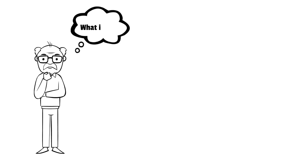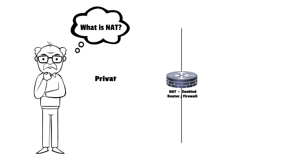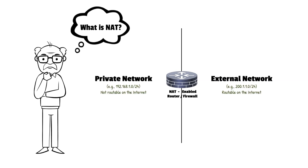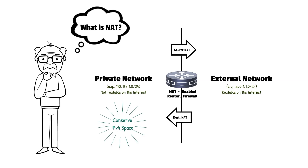Network Address Translation is a networking technique that allows devices in a private network to communicate with external networks like the Internet, by translating private IPs to public ones. NAT works in two directions: Source NAT, where internal devices initiate communication, and Destination NAT, where external users access internal services. This enables multiple devices to share a limited number of public IPs, while enhancing security by hiding internal network structures.